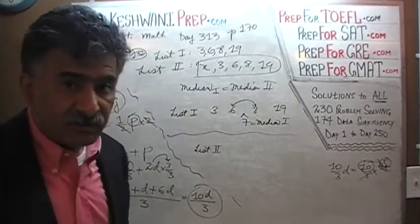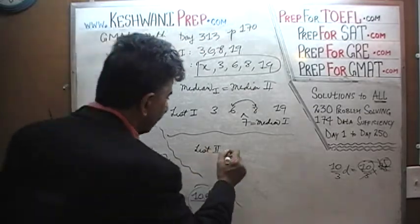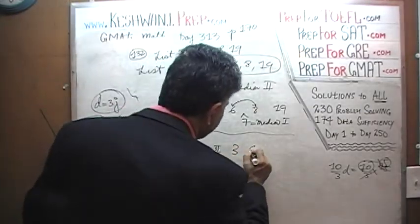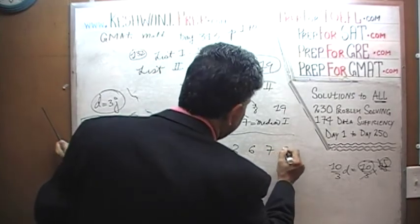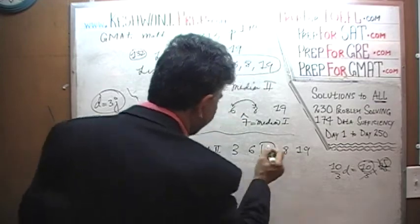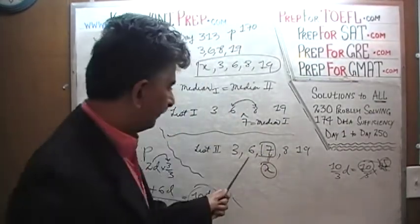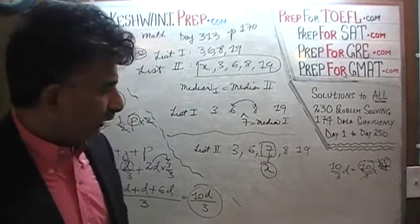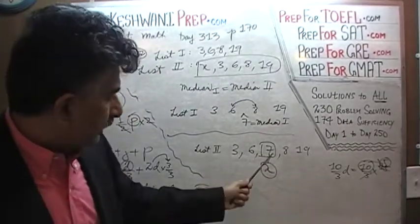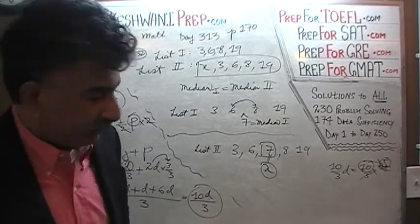And the median we just found out for list one is 7, but there is no 7 in the second list, which tells you that x is your 7. Here is our list: 3, 6, 7, 8, and 19. There is your median, and this is our x. Our x equals to 7. And this is how the numbers are arranged: 3, 6, 7, 8, and 19. And of course, arranged in order, 7 falls right in the middle. That's the median of the second list, which is the same as the median of the first list. That's all.